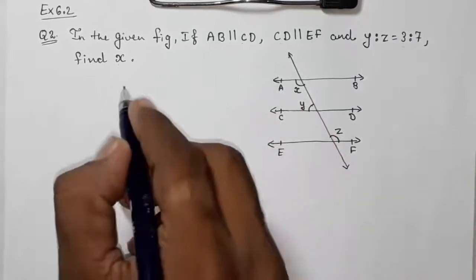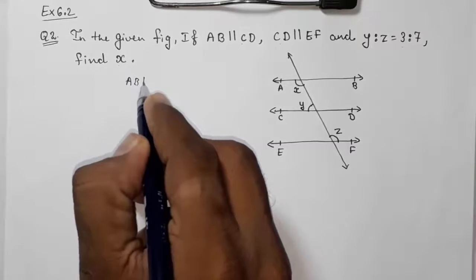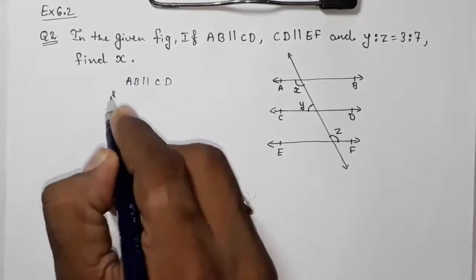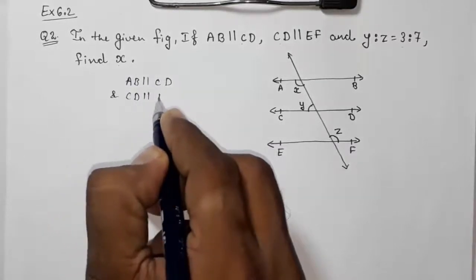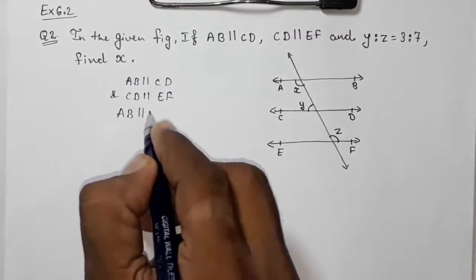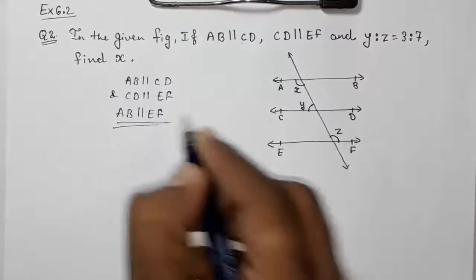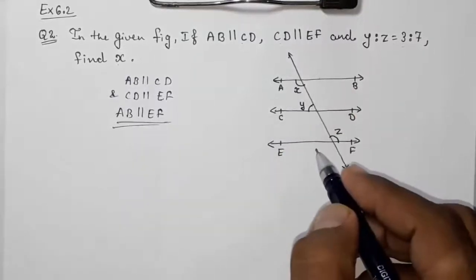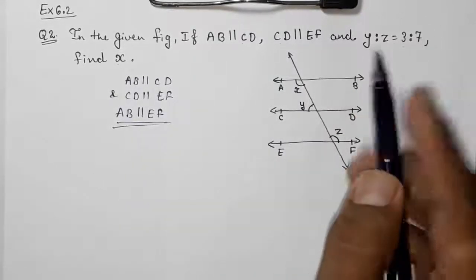They told us AB parallel to CD and CD parallel to EF, so we can directly write that AB is parallel to EF, means these two lines are also parallel.